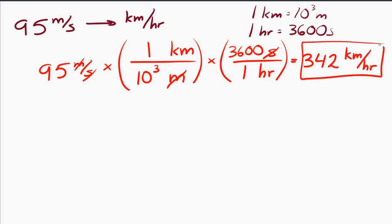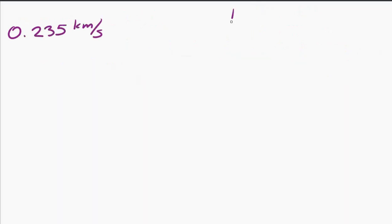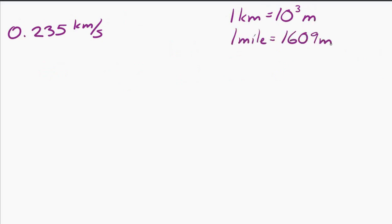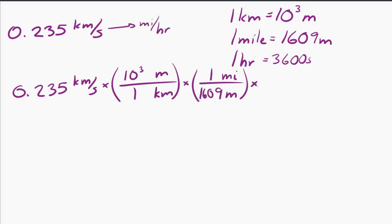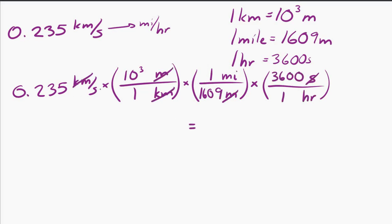The last example — converting 0.235 kilometers per second to miles per hour — is done without narration, and you end up with 525 miles per hour.